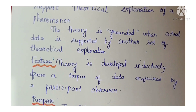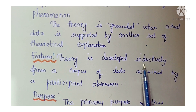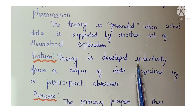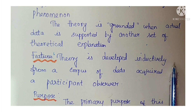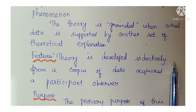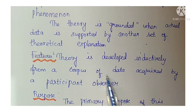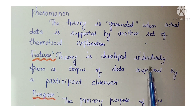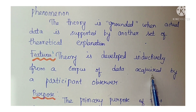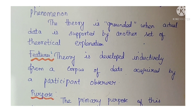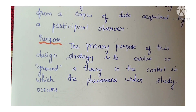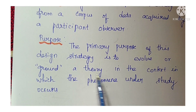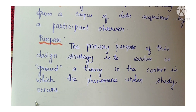The features of grounded theory: the theory is developed inductively — that is, from specific to general conclusions — from a corpus of data acquired by a participant observer. The observer must participate in the setting where data is being collected. The primary purpose of this design strategy is to evolve or ground a theory in the context in which the phenomena under study occurs.